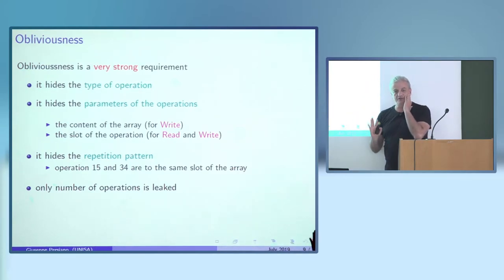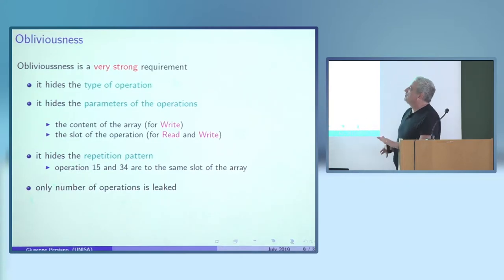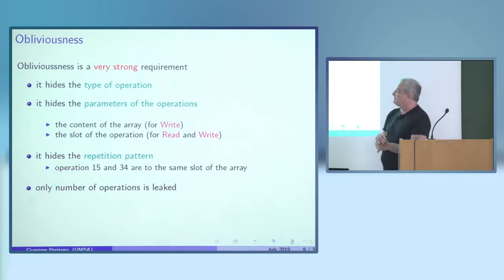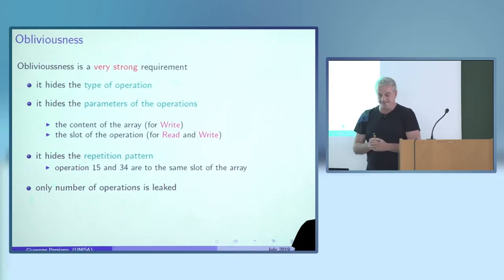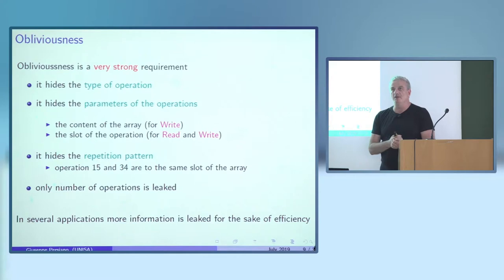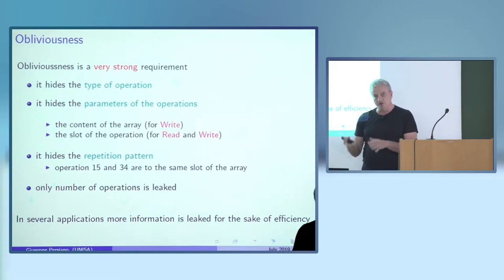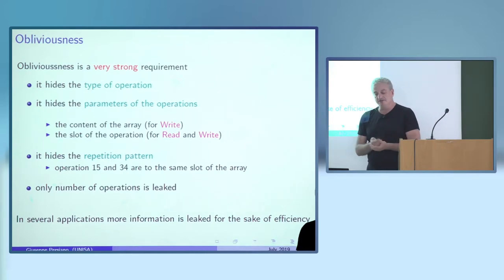Obliviousness is a very strong notion. It hides the type of operation, the parameters of the operations, the content of the array if done correctly, and the actual array entry accessed for reads and writes. It also hides the repetition pattern — we want to hide the fact that, say, operation 15 and operation 34 were on the same entry. In several applications, we are willing to sacrifice some security for efficiency and allow some information to be leaked.